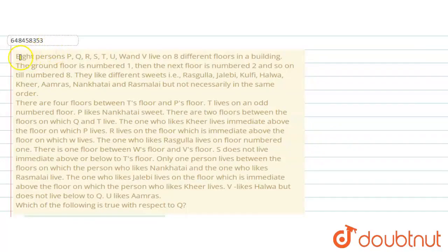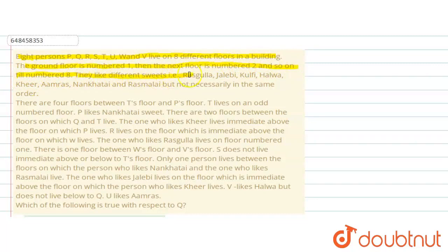The question says: 8 persons P, Q, R, S, T, U, V, W live on 8 different floors in a building. The ground floor is number 1, the next floor is number 2 and so on till number 8. They all like different sweets: rasgulla, jalebi, kulfi, halwa, kheer, amras, naan khatai, rasmalai — but not necessarily in the same order.